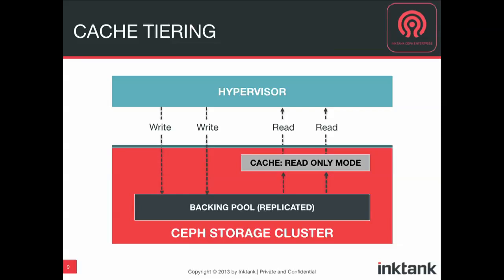Using this cache tiering feature in Ceph — which is new — you can define different types of speed for different types of storage needs. Particularly, it's useful if you have a back-end that is erasure-coded and then a cache tier pool in front of that on solid-state drives, so you can get speed and cost-effectiveness.